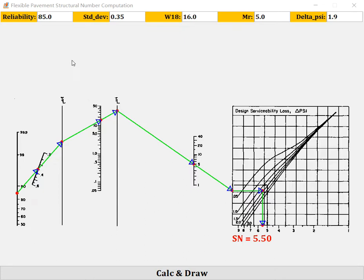You know this structural number is based on the AASHTO pavement structural design 1993. For calculation of the structural number, there are five inputs: first is reliability, second is standard deviation, third is traffic axle load W18 kips, MR is resilient modulus of subgrade, and Delta PSI is the PSI loss design.